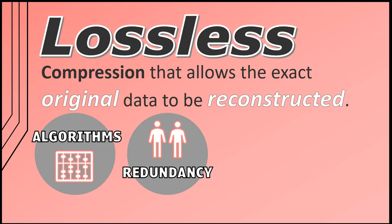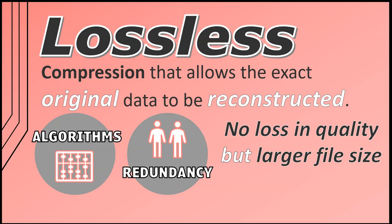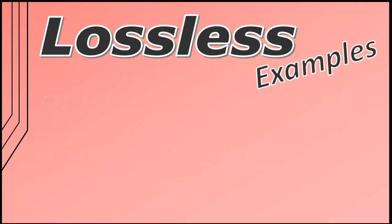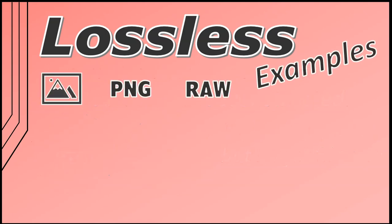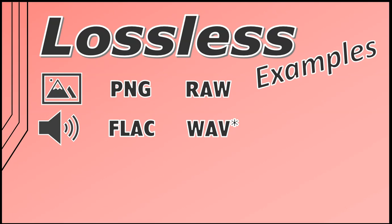Redundancy refers to repeating patterns of data that can be represented more efficiently. This results in reducing the file size with no loss in quality, but the file is still larger compared to lossy compression techniques. Examples of lossless compressed files include PNG or RAW files for images, FLAC or WAV files for music or audio files. Taking note that WAV files are not actually compressed at all, but they fall under the lossless compression category.